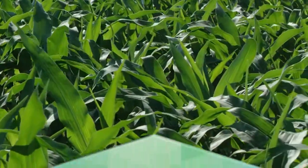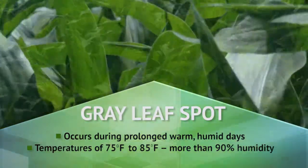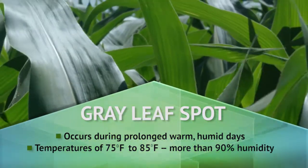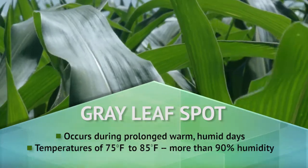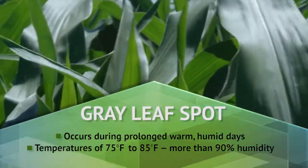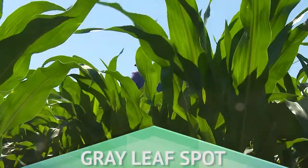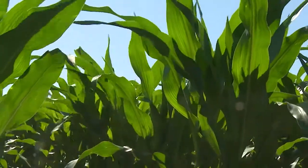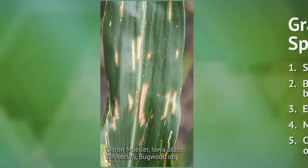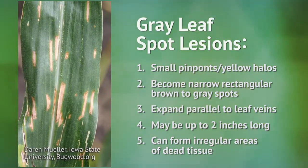Gray leaf spot spreads as spores are splashed from rain or irrigation under the lower leaves early in the season. When these new infections produce spores, they can be carried by air currents higher into the canopy or into neighboring fields. This cycle gives the appearance that the disease is moving up the plant.